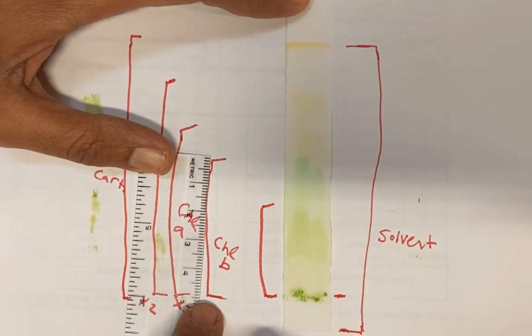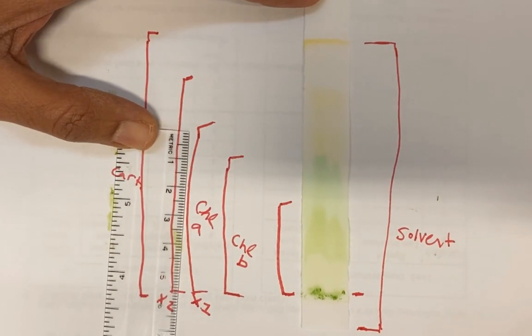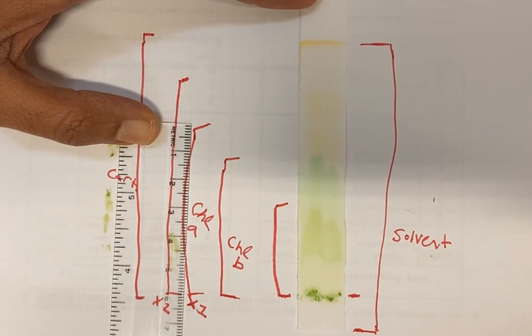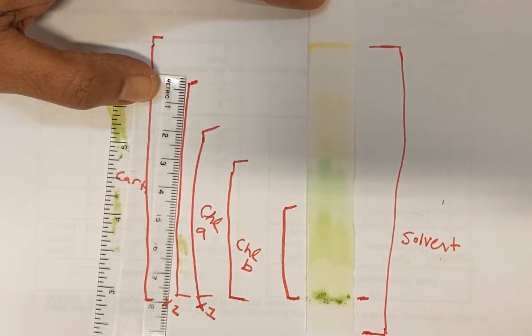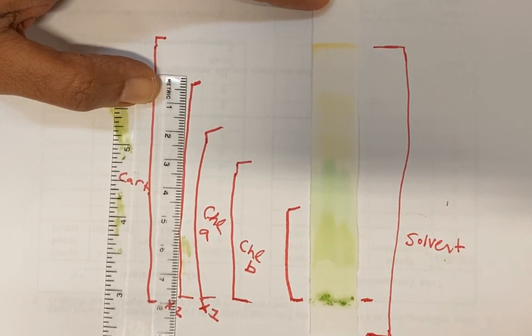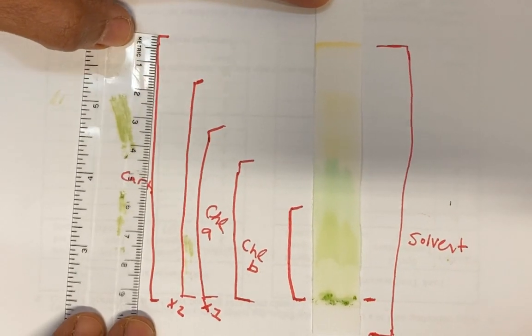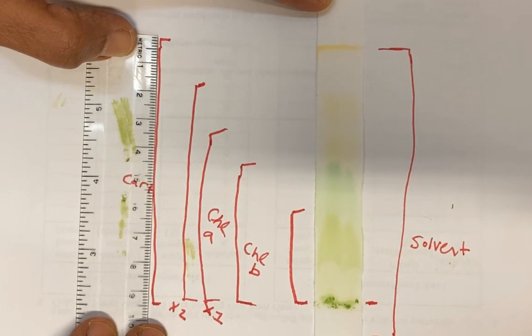Okay, and then there's your chlorophyll A. Okay, so again, up to here. There's your first xanthophyll. And there's your second xanthophyll. And lastly, your carotene.